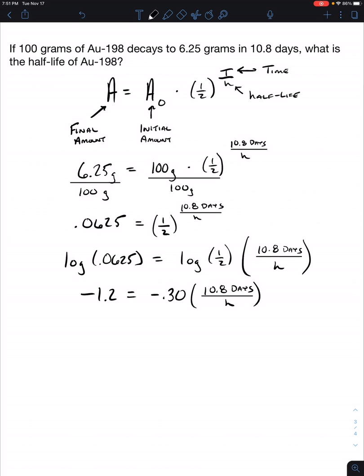So now that we have taken the log, we can go ahead and combine our variables and finish solving our question. So we're going to divide out negative 0.30 from both sides. So this is going to be 4, which is equal to 10.8 days over H.